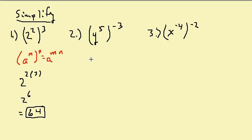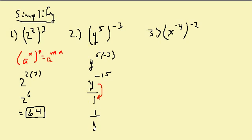Here I have y to the 5 times negative 3, which is y to the negative 15. I have a negative exponent, so I'm going to make it positive. I put this over 1 and move it down to the denominator, so this is 1 over y to the positive 15 — there's my answer.